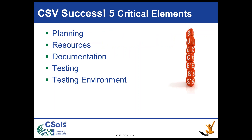So these are the five critical areas we're going to review, to keep in consideration for a computer system validation. As we go through each one, the common mistakes are going to appear in red, and the suggestions and recommendations will appear in blue with a little green dot next to them.